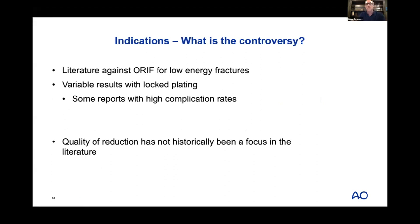What's the controversy about indications? The main issue is that there's a lot of literature against open reduction and internal fixation for low-energy fractures. There are papers showing variable results with locked plating and complication rates as high as 49 percent. The question is: why are we operating on fractures that have high complication rates? Importantly, for a lot of the prior literature the quality of reduction has not historically been a focus when looking at outcomes, so I think we can potentially do better.